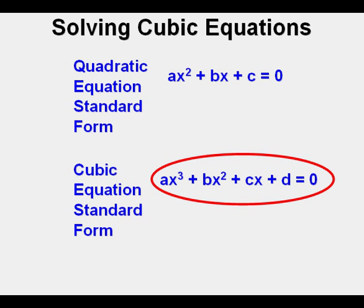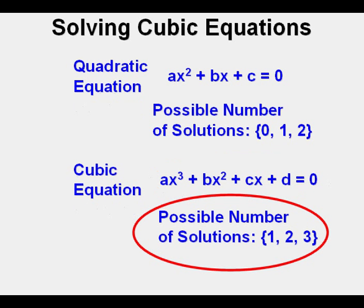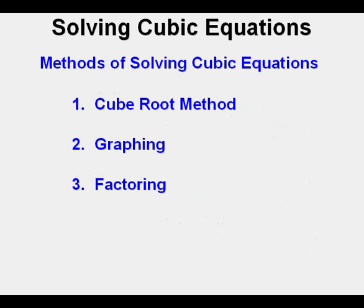One key contrast between cubic equations and quadratic equations is the possible number of solutions. While a quadratic equation may have one, two, or even no solutions, the cubic equation can have one, two, or even three solutions. There will always be at least one solution to a cubic equation.